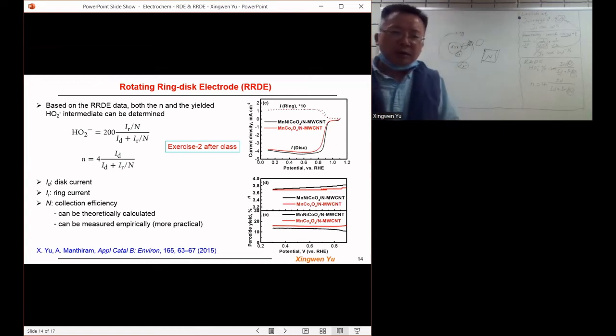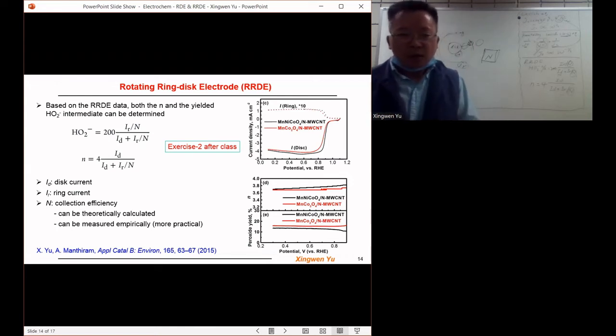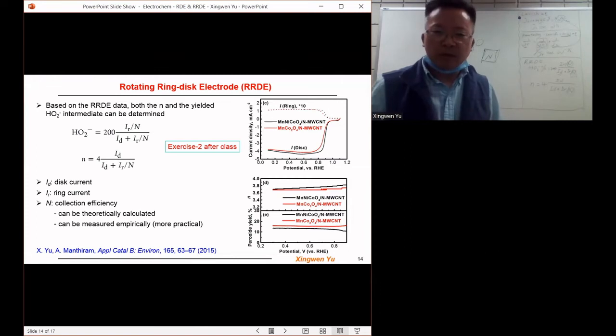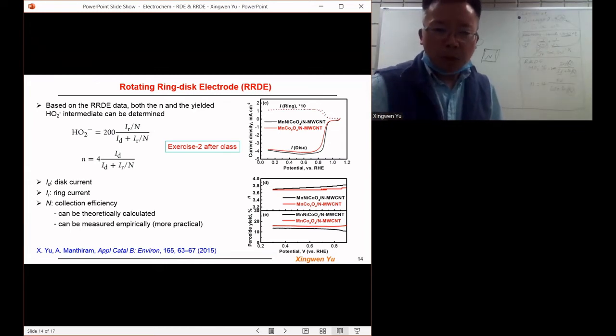So the example I want to give is also based on the two catalysts I talked about just now. The quaternary transition metal oxide system and binary transition metal oxide system for catalyzing the oxygen reduction reaction.